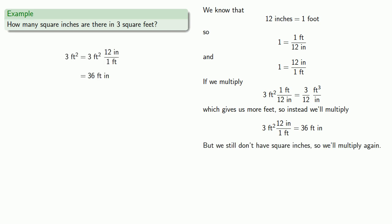Well, nothing in the rule says we only have to multiply once, let's multiply by a second factor of 12 inches over one foot. And if we do that, the product of our numbers 36 and 12 give us 432, and the product of our units will give us square inches, which is what we want.